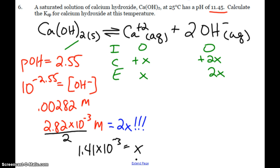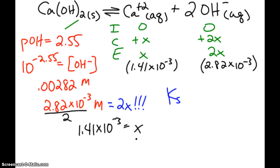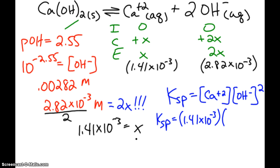And so now when I go up here to plug it in, 1.41 times 10 to the negative third for calcium, and this was my 2X, 2.82 times 10 to the negative third for hydroxide. So Ksp is the concentration of my calcium ion times the concentration of hydroxide squared. So calcium 1.41 times 10 to the negative third, hydroxide 2.82 times 10 to the negative third squared. And when I plug and chug, I get 1.12 times 10 to the negative eighth.